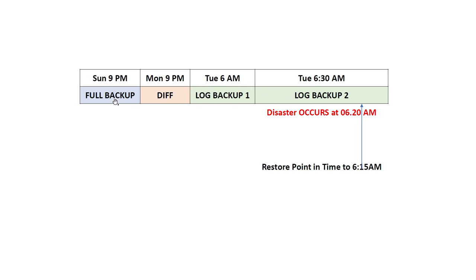You took a full backup on Sunday, a differential backup on Monday, then on Tuesday morning at 6 AM you took log backup one, and at 6:30 AM you took log backup two. However, before you took the second log backup, a disaster occurred at 6:20. A disaster can be anything — somebody dropped a table, deleted a lot of records, or dropped the database.